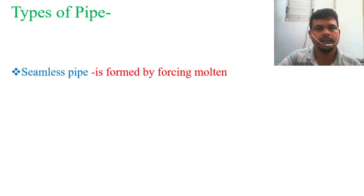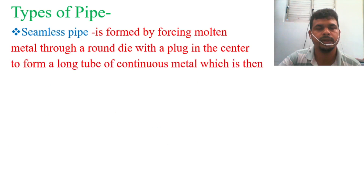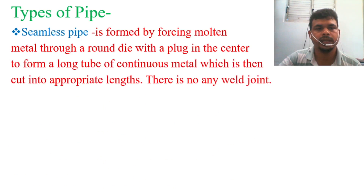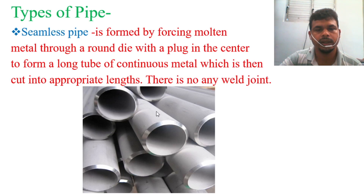Now let's see what a seamless pipe is. A seamless pipe is formed by forcing molten metal through a round die with a plug in the center to form a long tube of continuous metal, which is then cut into appropriate lengths. There is no weld joint. As you can see from the photos, seamless pipes don't have any welding joint.